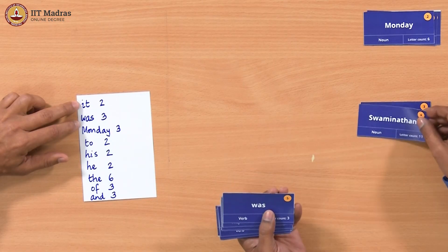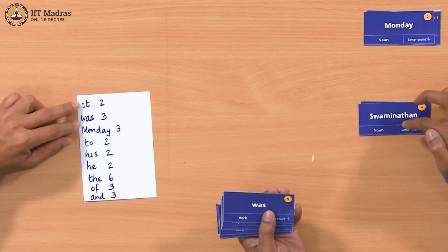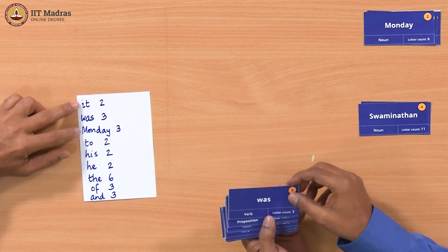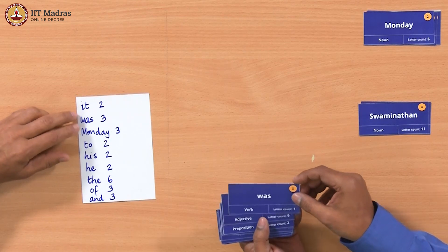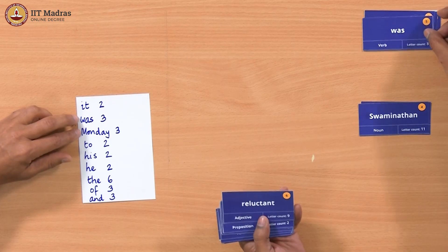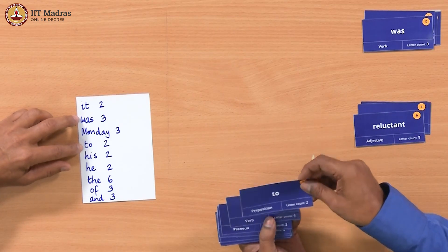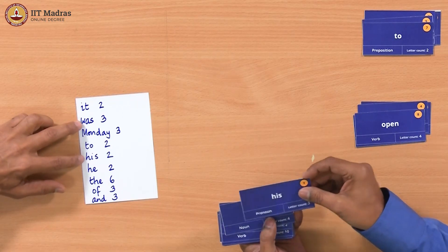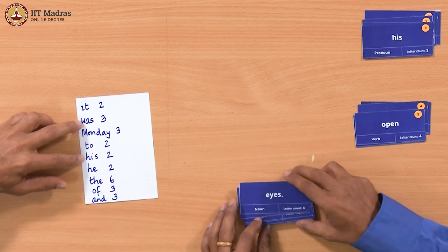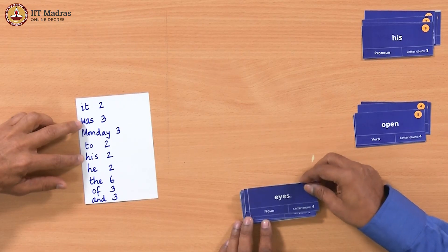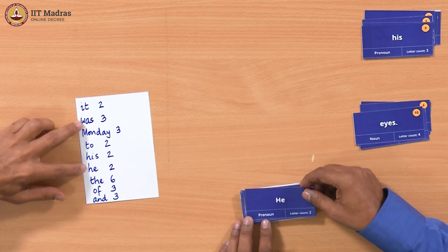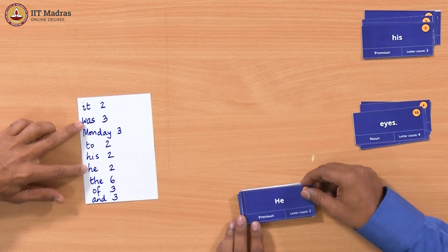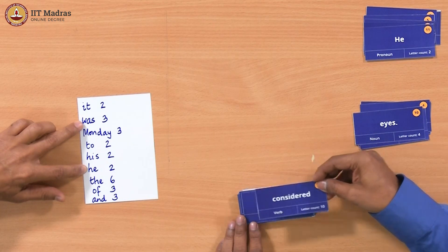Swaminathan - we keep it, it is not in the frequent list. We first make it all small letters then check. 'Was' - discard, it is in the list. 'Reluctant' - keep it. 'To' - discard. 'Open' - keep it. 'His' - his appears twice so we discard it. 'Ice' - has a full stop which we ignore, then we keep ice. 'He' - starts with a capital H but after converting to small letters it matches 'he' in our list, so discard it. 'Considered' - not in the list, keep it. 'Monday' - frequent, discard.